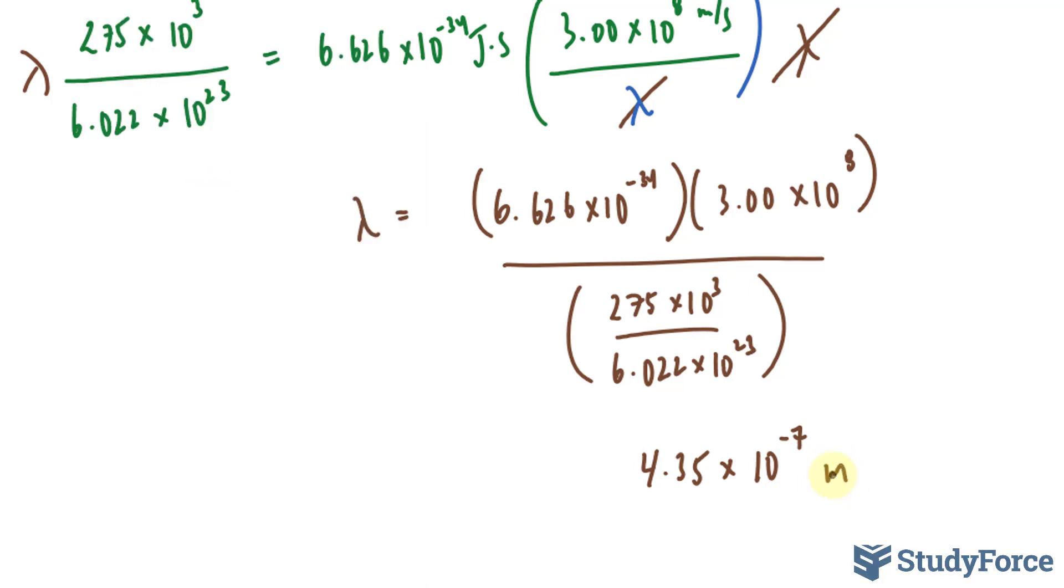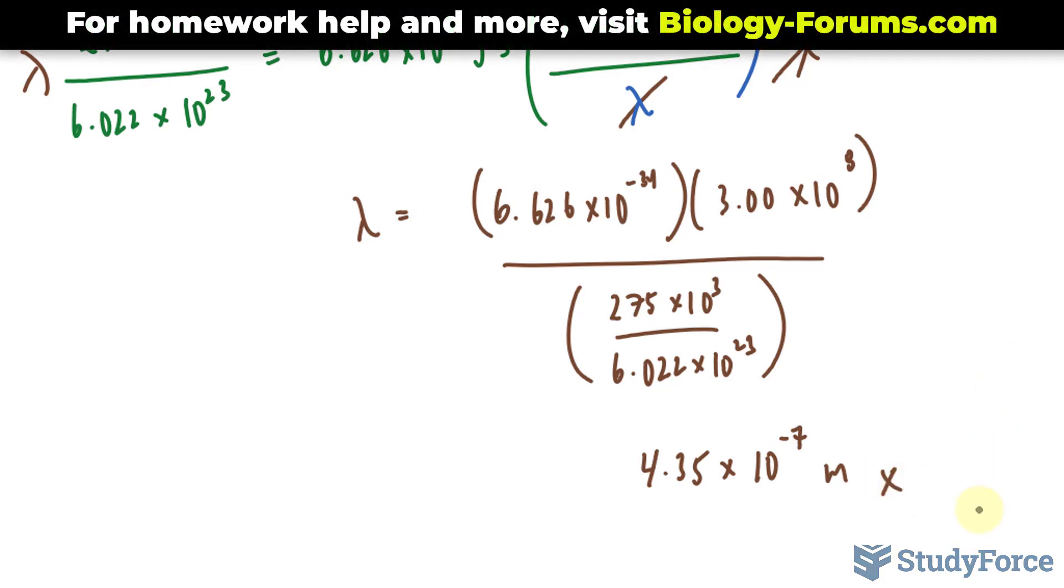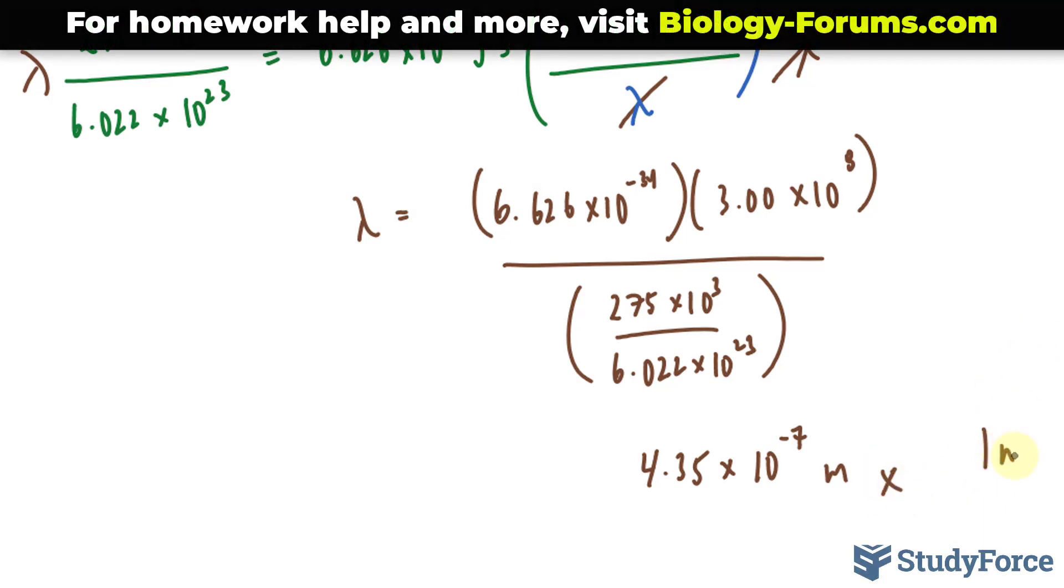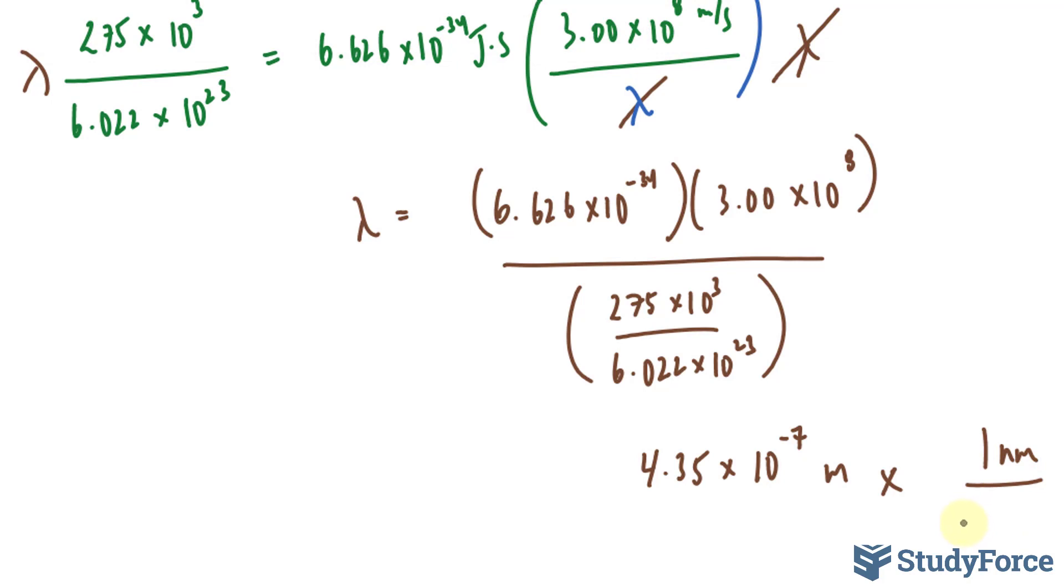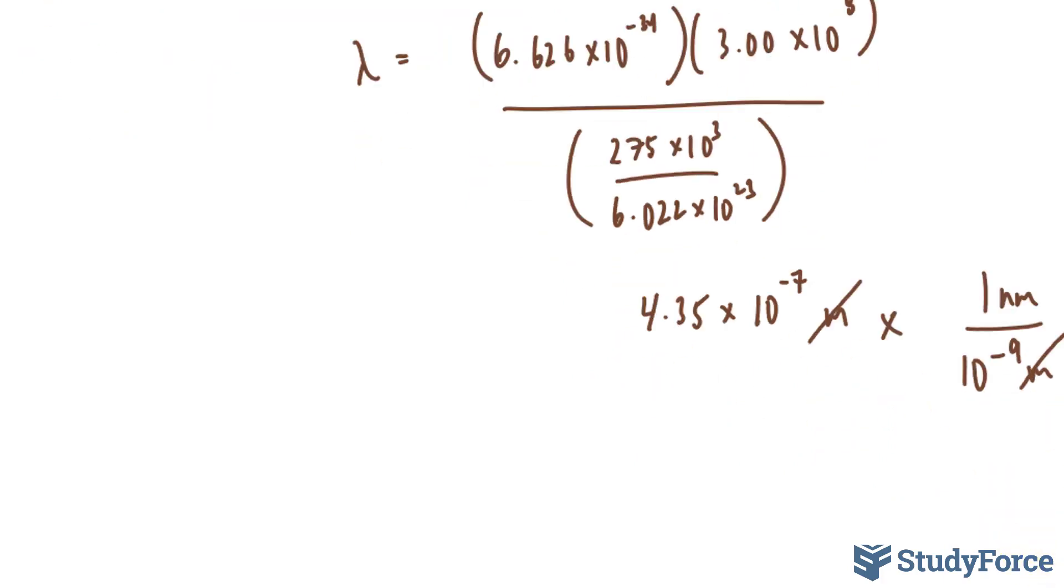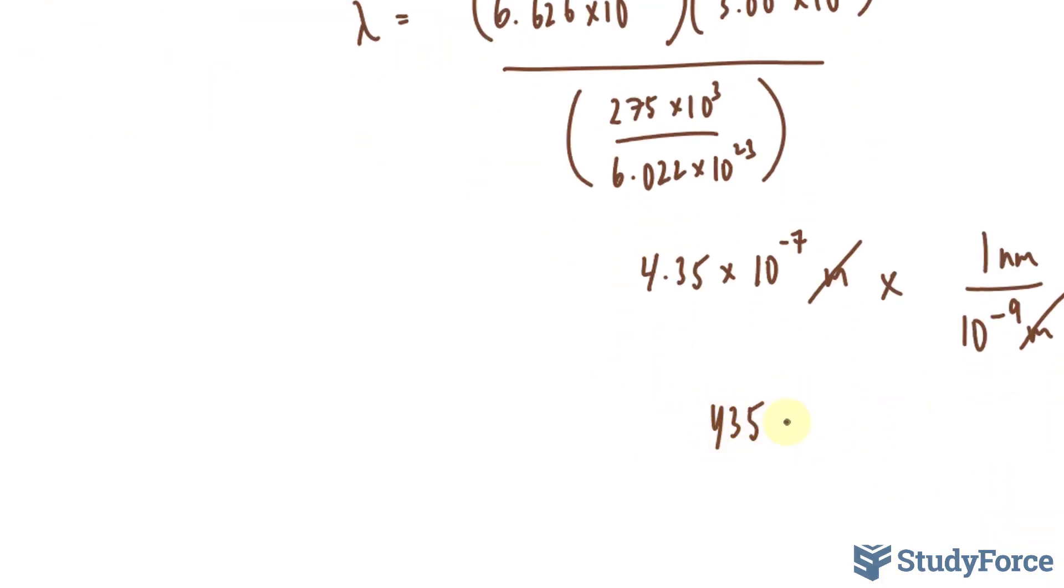We want to put this in nanometers, and we can do that by multiplying this by 1 nanometer equals 10 to the power of negative 9 meters. The meters unit will cancel out, leaving us with 435 nanometers, or 4.35 times 10 to the power of 2 nanometers.